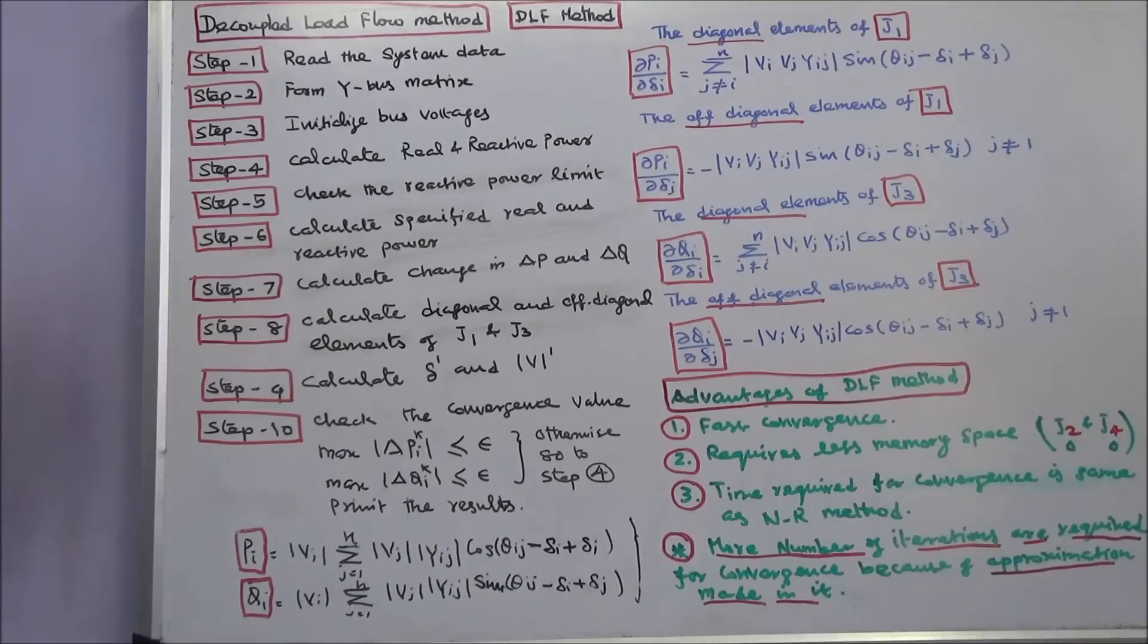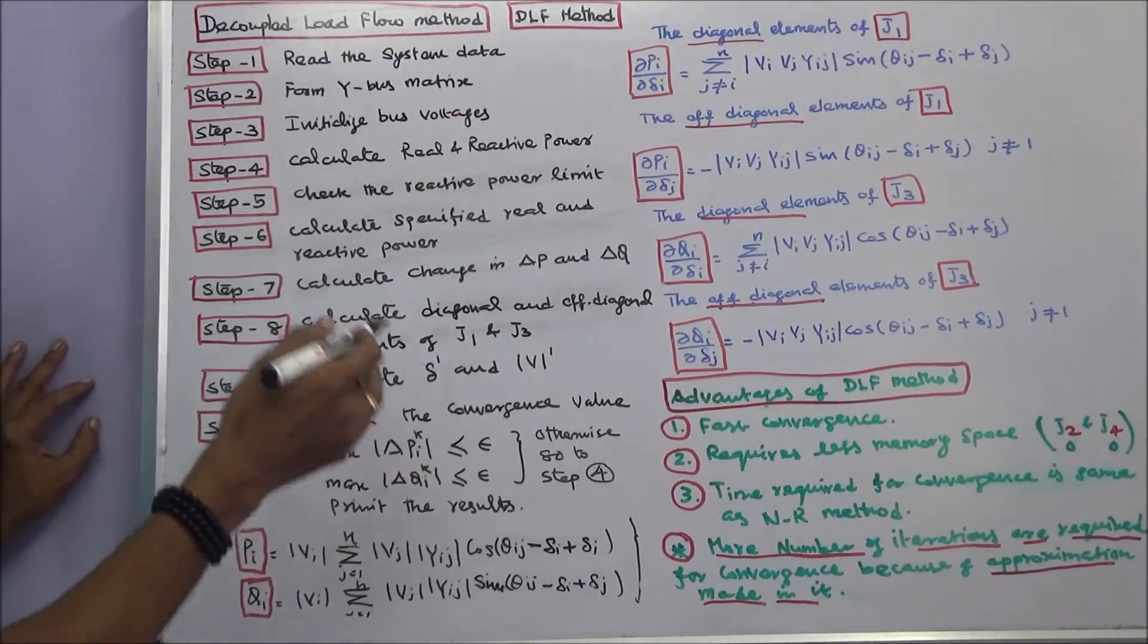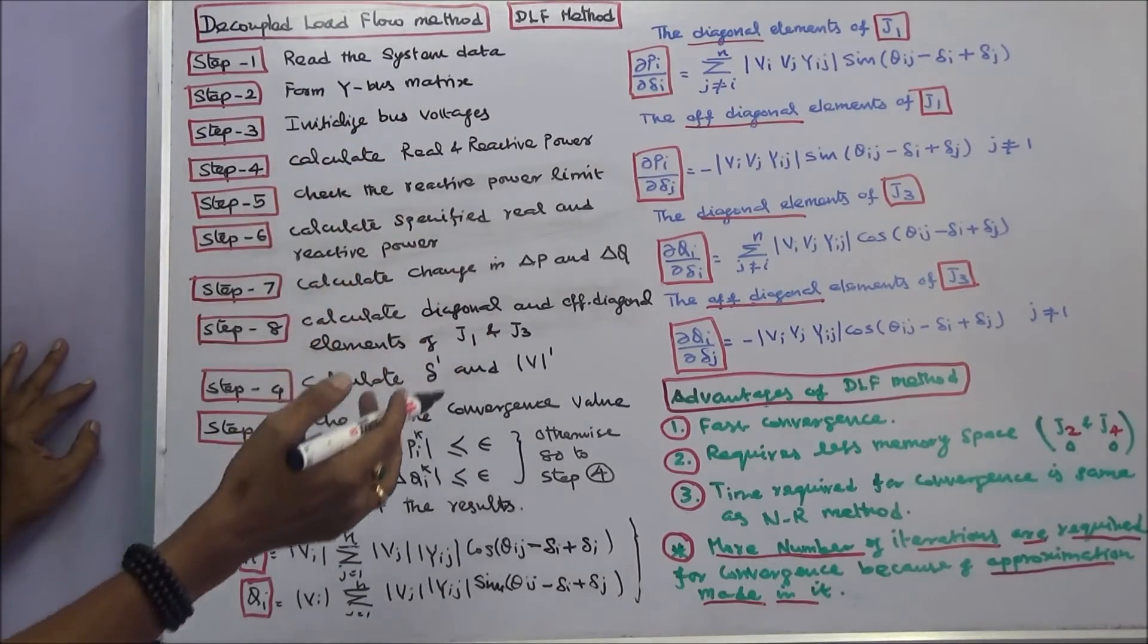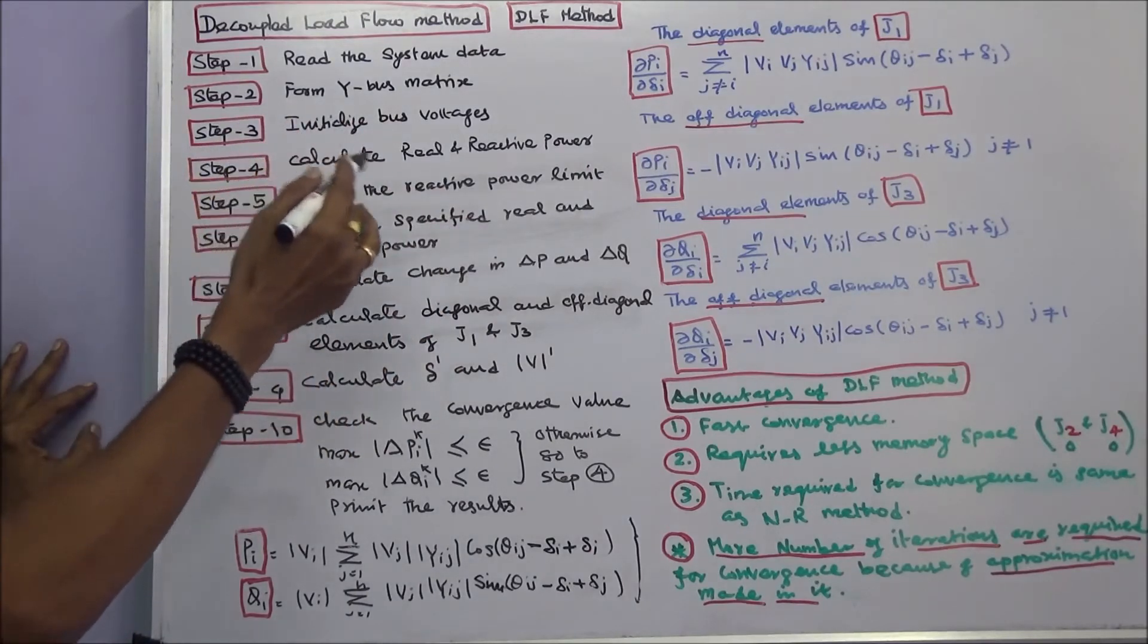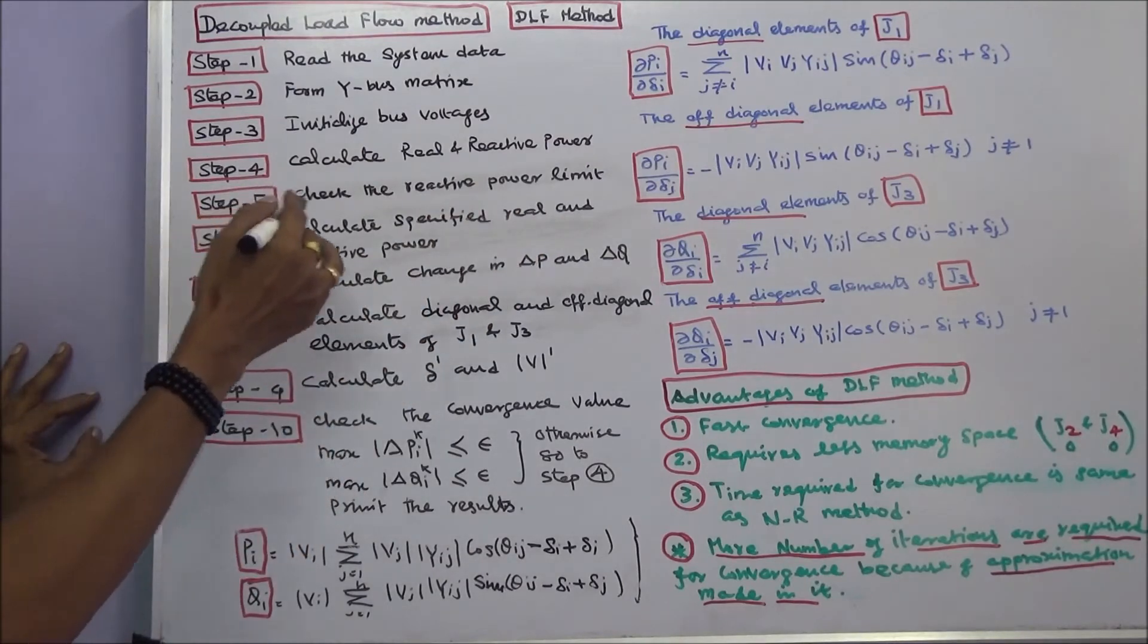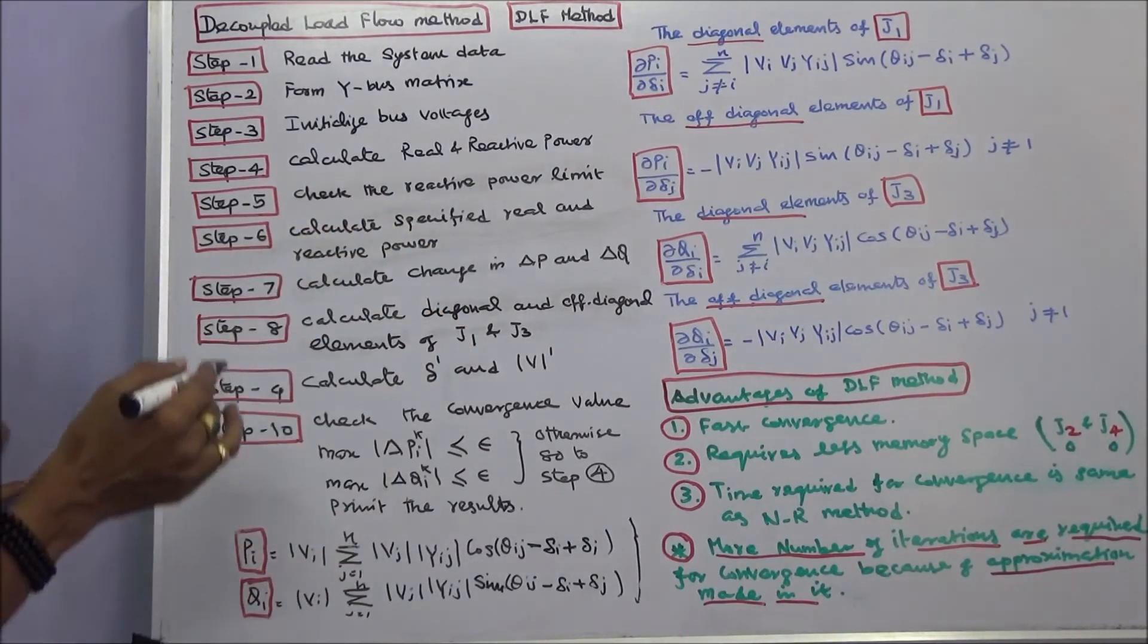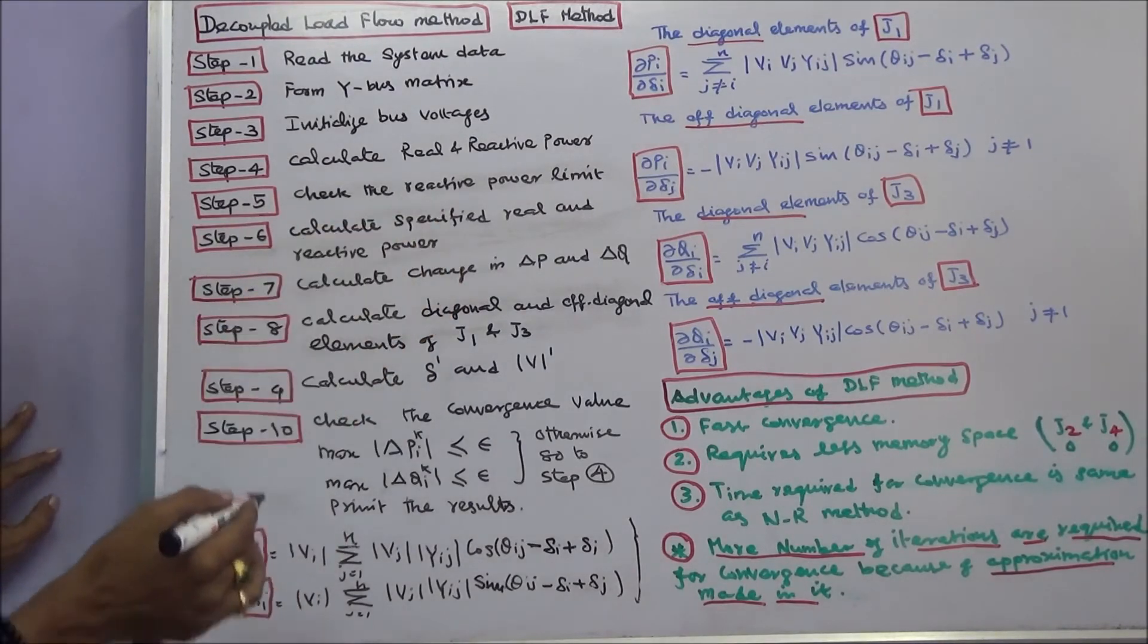Now we will see the algorithm of decoupled load flow method. Step 1: Read the system data. Step 2: Form Y-bus matrix. Step 3: Initialize the bus voltages. Step 4: Calculate the real and reactive power. Step 5: Check the reactive power limit. Step 6: Calculate specified real and reactive power. Step 7: Calculate change in del P and del Q. Step 8: Calculate diagonal and off-diagonal elements of J1 and J3 using these equations.